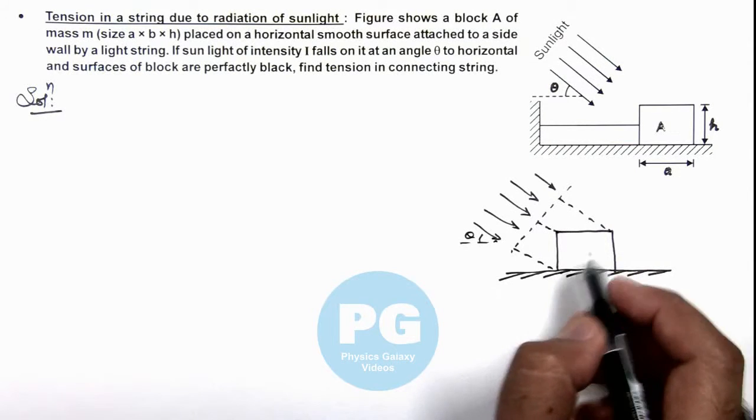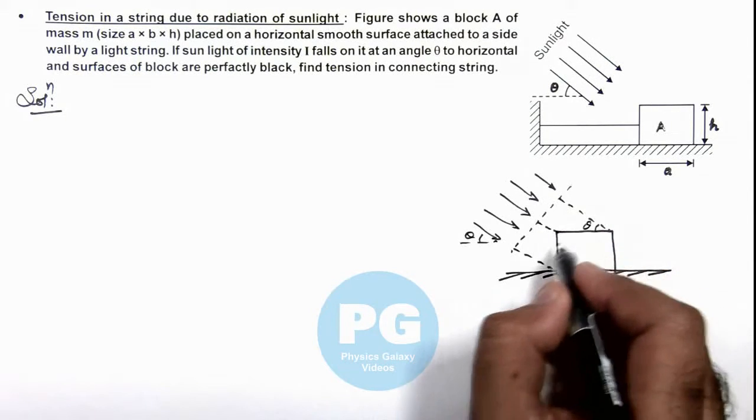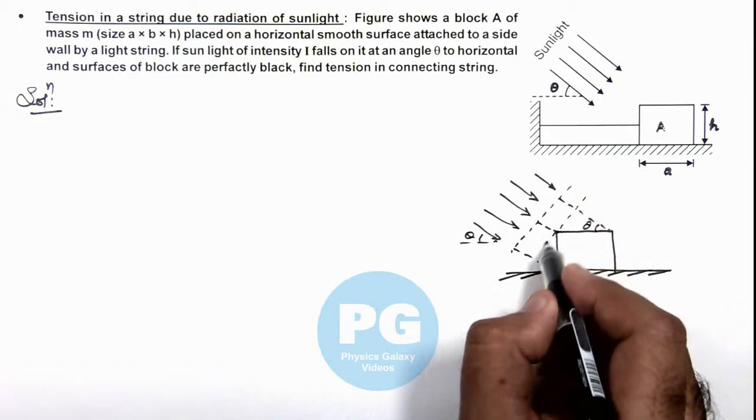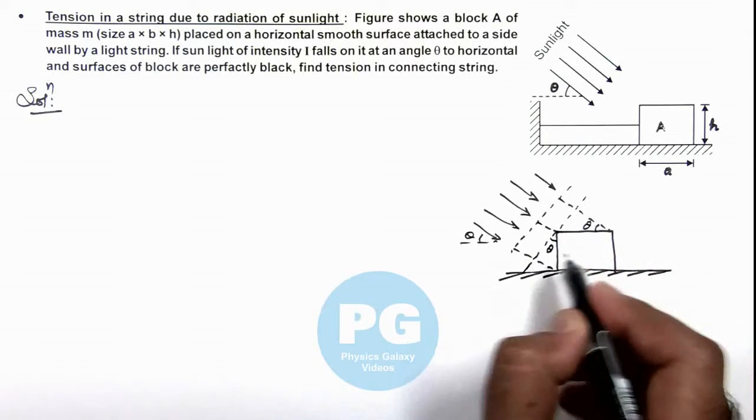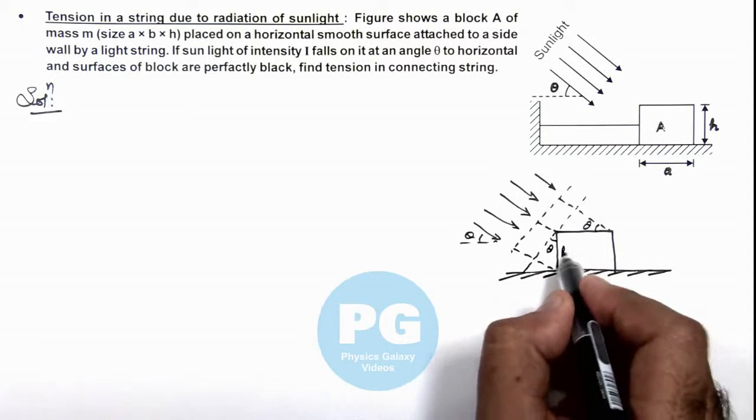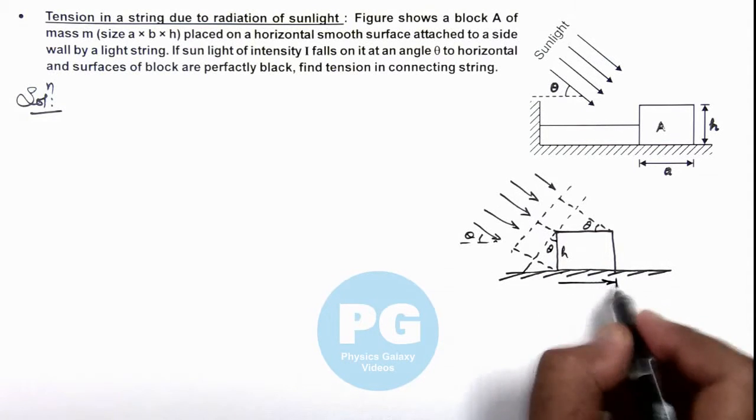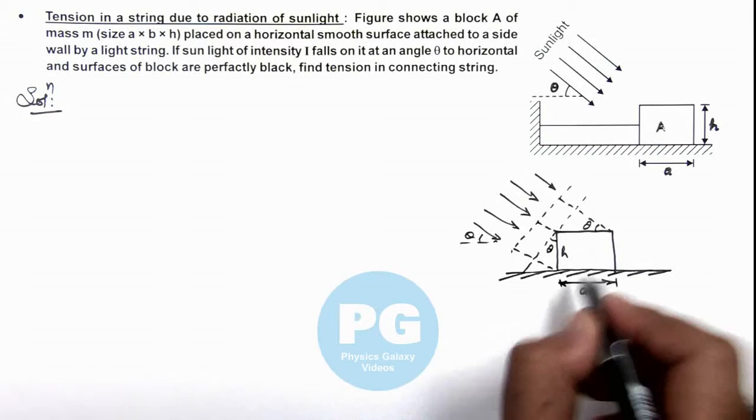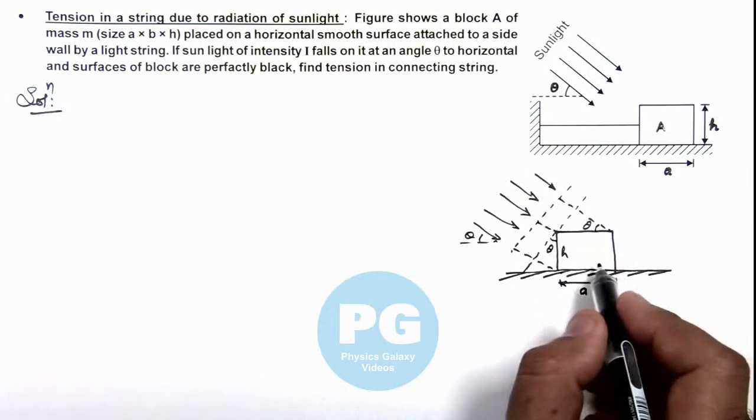Here we can see this angle is θ, and if we talk about this normal, this angle will also be θ. So this height is h and its width is a, and the depth into the plane of this paper we are given with b.